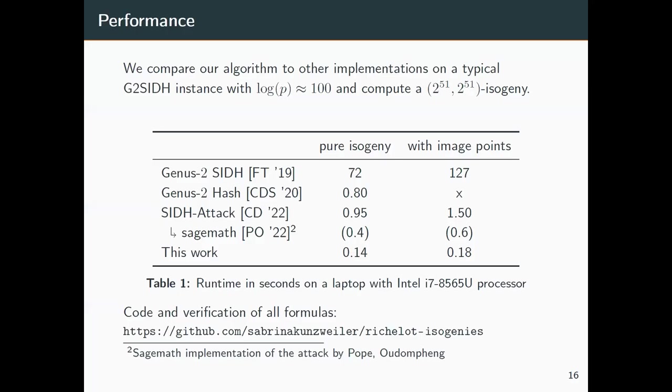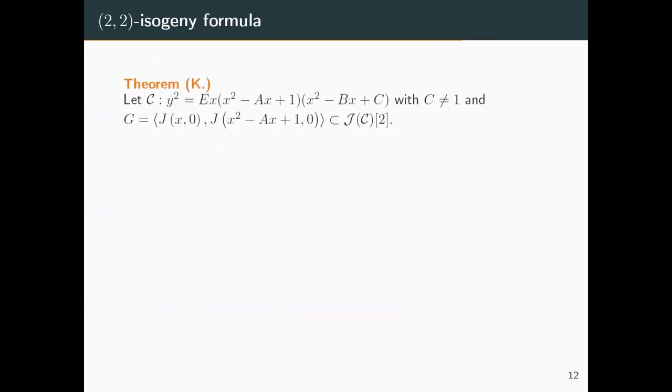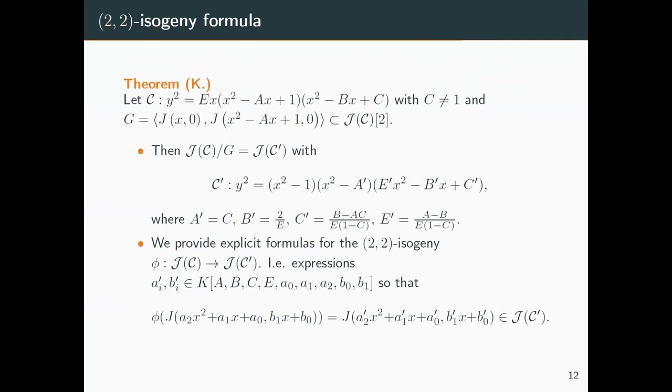Q&A: One question was about the split case — the formulas don't work for pushing points through when the isogeny splits. In the theorem, the formulas hold when c ≠ 1 (where c is a coefficient, not a curve). If c = 1, we end up in the split case. So we can detect very easily if something splits or not, but the formulas don't work for pushing points through those.